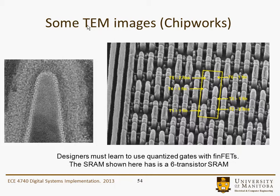This is a TEM — a Transmission Electron Microscope image or photomicrograph. This would be the fin itself, and this is the silicon inside the channel region. This here is the gate dielectric, and this would be the gate outside. It sort of looks kind of finger-shaped. This is a photomicrograph of something that's been reverse-engineered, and you can see there are six transistors for a six-transistor SRAM, and they identify the number of fins associated with those different devices. This company actually makes its money by reverse-engineering these and providing parameters and specifications for what they think is being manufactured.